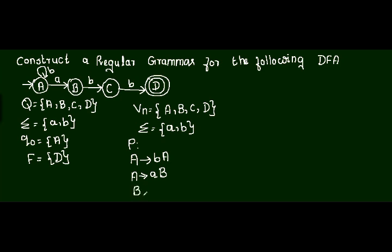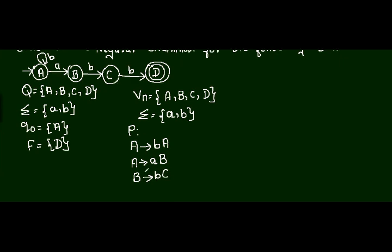Now B is my present state. On input b, the next state is C. Since C is not a final state, I write only one production: B → bC. Now C is my present state. On input b, the next state is D. Since D is the final state, I write one additional production: C → b as well as C → bD.